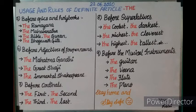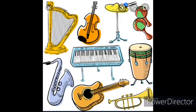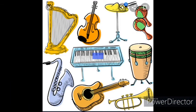Next we will move to the last rule — the ninth rule: before musical instruments. For example: the guitar, the violin, the flute, the piano, the shehnai, the xylophone. Before the names of musical instruments, we use the definite article 'the.'